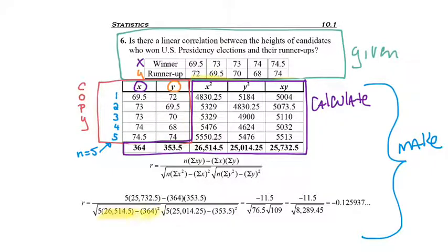In the denominator, it starts off with N, which we said was 5. Now, remember, this is where it gets tricky. I'm taking the X squared column total, which is the 26,500 number. But then, I'm subtracting the sum of X column, which is the 364 number. But most important, you've got to remember to square the 364. And again, you could type that right into your calculator to get 76.5.